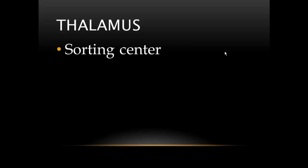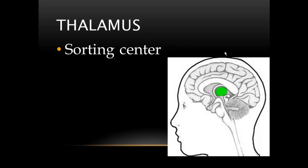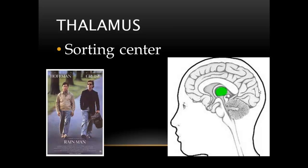So the thalamus is the sorting center. It sorts what impulses are going to reach the conscious brain, and it's going to relay information from the conscious brain back down to other parts of the brain. The sensory input comes up the spine through the brain stem, and then into the brain. The thalamus is going to sort where in the cerebrum the sensory input or the information is going to go.